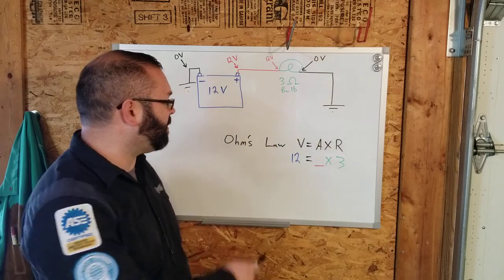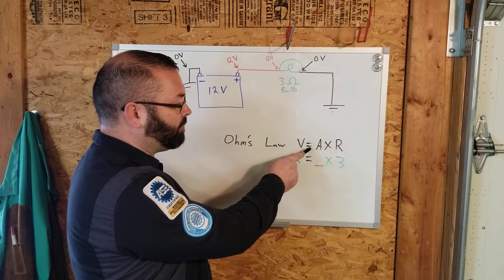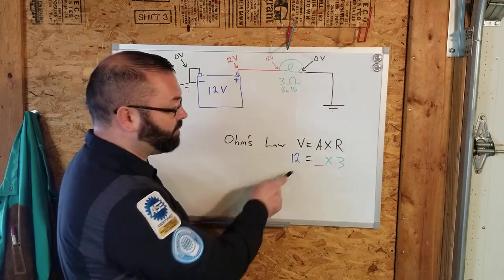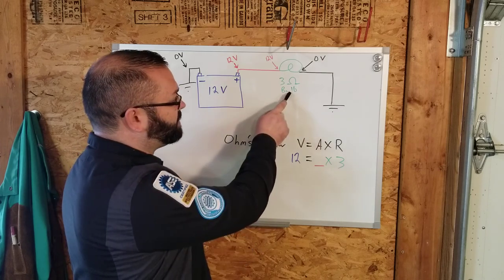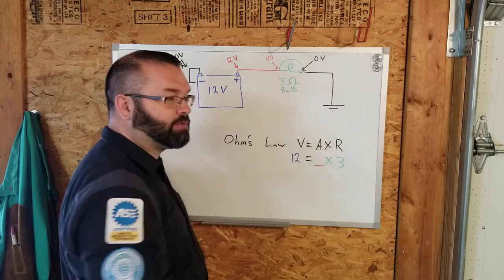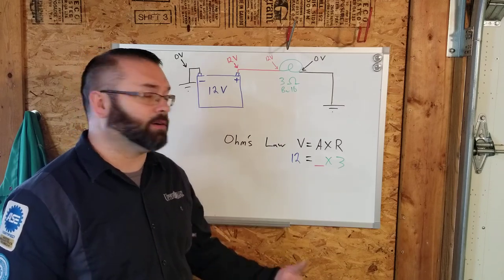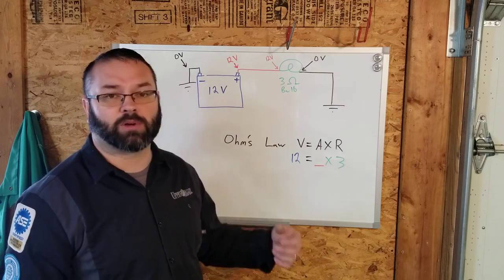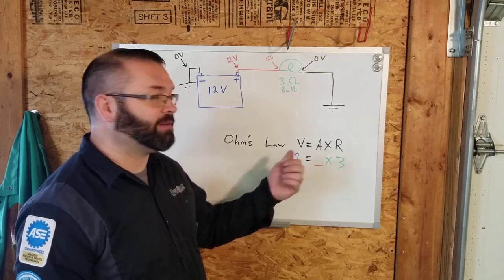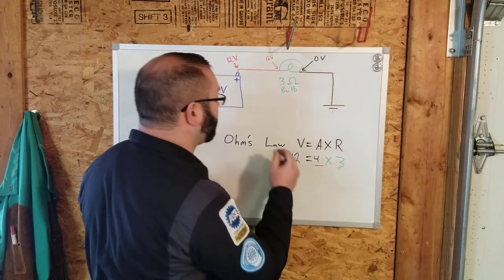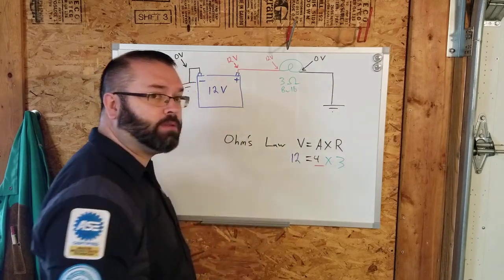Now, if we go back to Ohm's law we talked in the last video, our volts equal amps times resistance. We know our volts are 12 volts and we know our resistance to the bulb is three. It leaves us with blank for amperage. So we go to the basic math here. 12 equals what times three, or we can do division. 12 divided by three is going to be four.